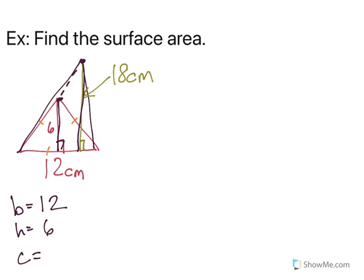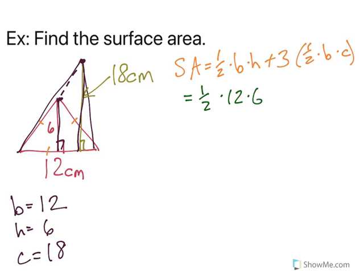So if my surface area is one-half base times height plus 3 times one-half base times C, where C is the slant height, now I can plug in what I know: one-half times 12 times 6 plus 3 times one-half times 12 times 18.